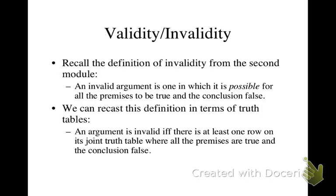We can recast this definition in terms of truth tables as follows. An argument is invalid if and only if there is at least one row on its joint truth table where all the premises are true and the conclusion false.